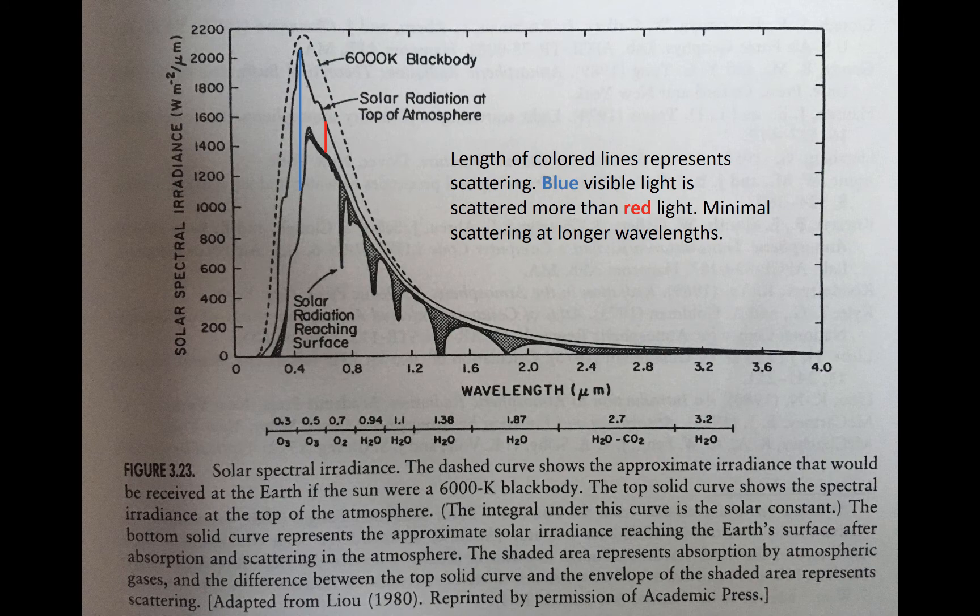Finally, scattering reduces how much radiation reaches the surface compared to the top of atmosphere. The difference between the top of the shaded region and the top black line indicates the sink as a function of wavelength caused by scattering. The blue and red lines represent scattering of blue and red visible light. As discussed in the previous video, blue light is scattered more than red light by the atmosphere. Near-infrared radiation is not scattered comparably as much as you can see by the small difference between lines at longer wavelengths.